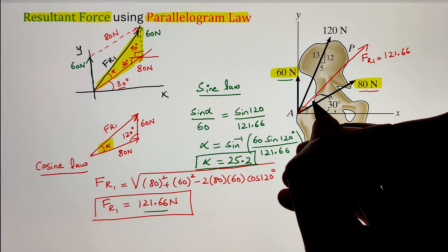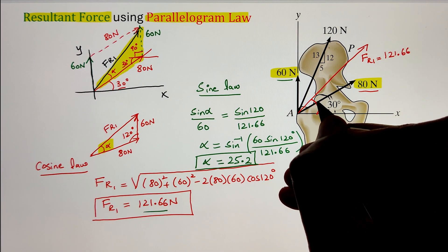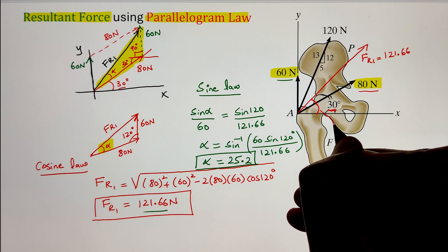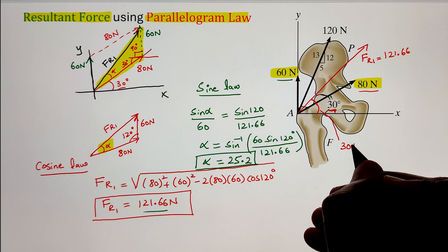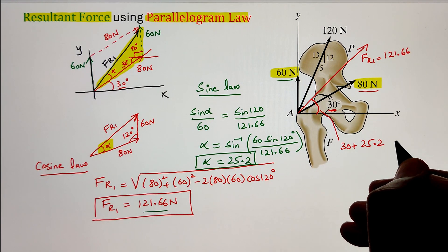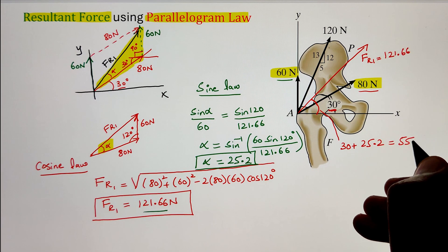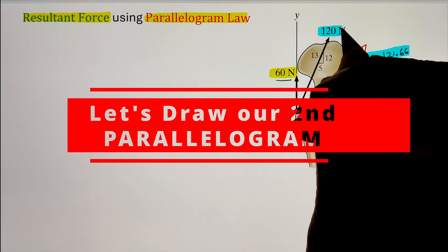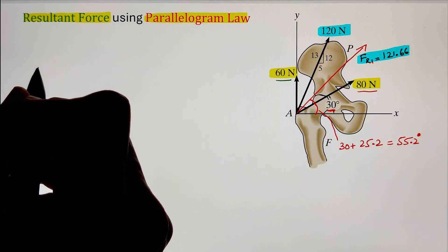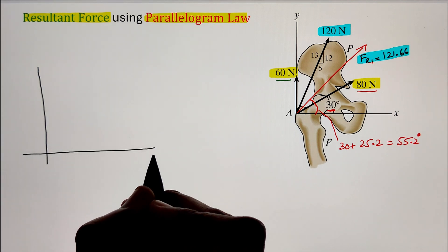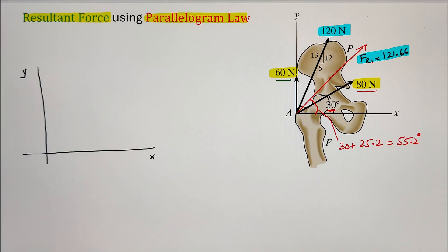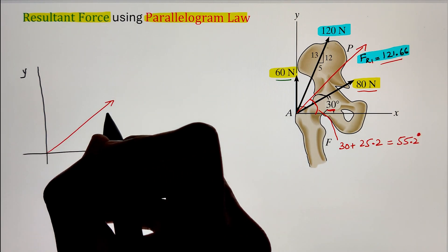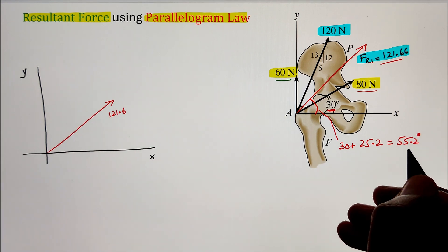Now that we have identified the resultant of our two forces, we repeat the same process by drawing a parallelogram between Fr1 and the force of 120 Newton acting on the pelvic bone. We apply the parallelogram law one more time. Drawing our axes and plotting Fr1 of 121.66 Newton making an angle of 55.2 degrees from the horizontal x-axis, we also have a force of 120 Newton described by a right triangle with hypotenuse of 13, base of 5, and perpendicular of 12.